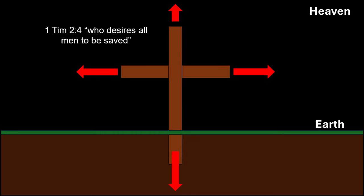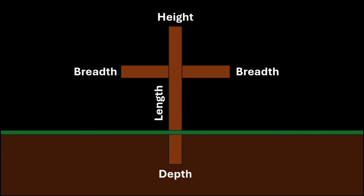Notice that the cross stretches out in all directions, signifying the universal salvific will of God, who desires all men to be saved by his sacrifice on the cross (1 Timothy 2.4). Christ died with outstretched arms, welcoming all nations to his hug of love and salvation. The cross possesses breadth, length, height, and depth, connecting with Ephesians 3.18-19, which says, "Power to comprehend with all the saints what is the breadth and length and height and depth, and to know the love of Christ, which surpasses knowledge, that you may be filled with all the fullness of God."